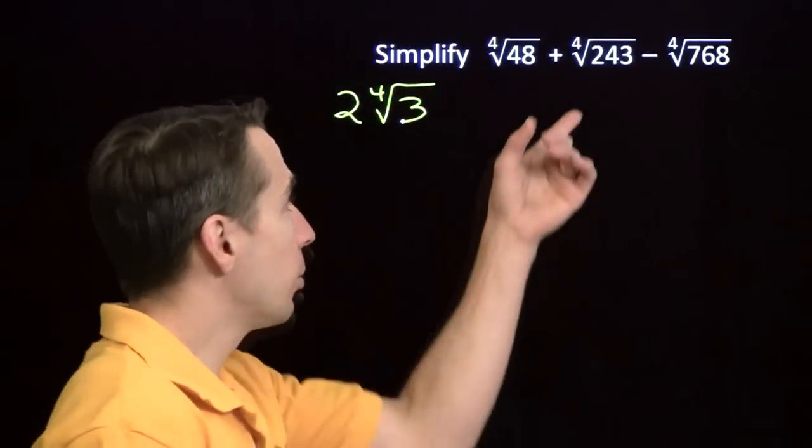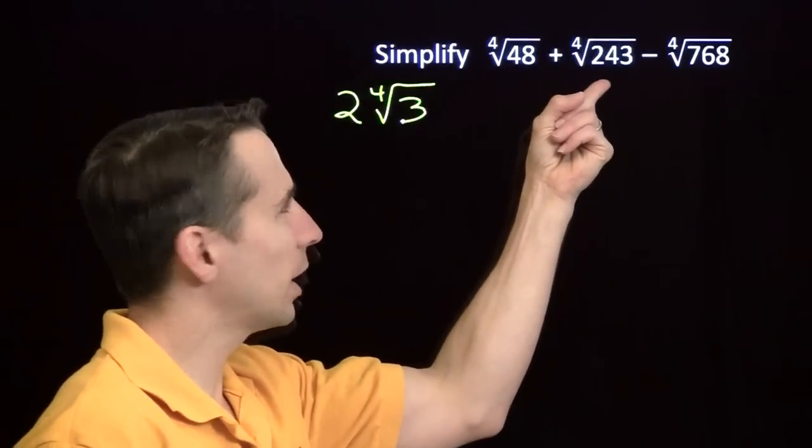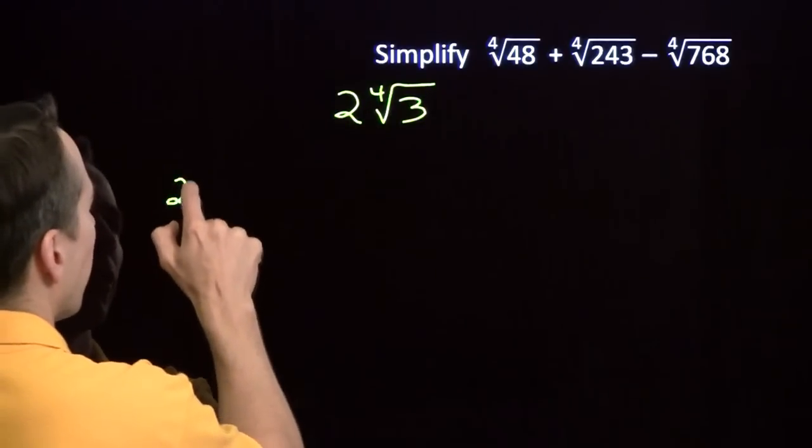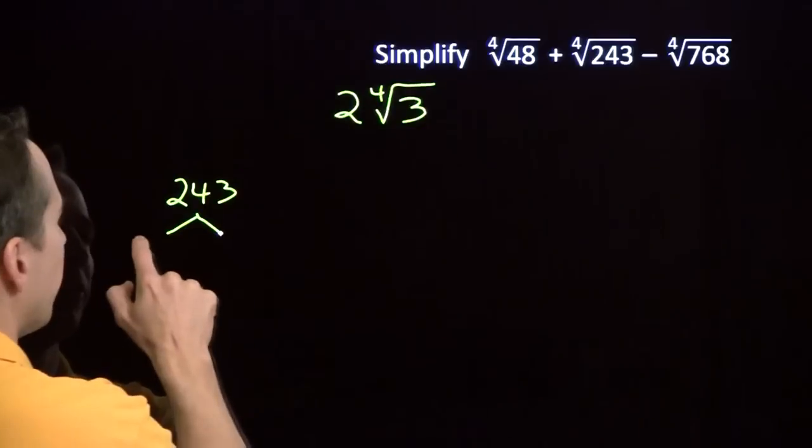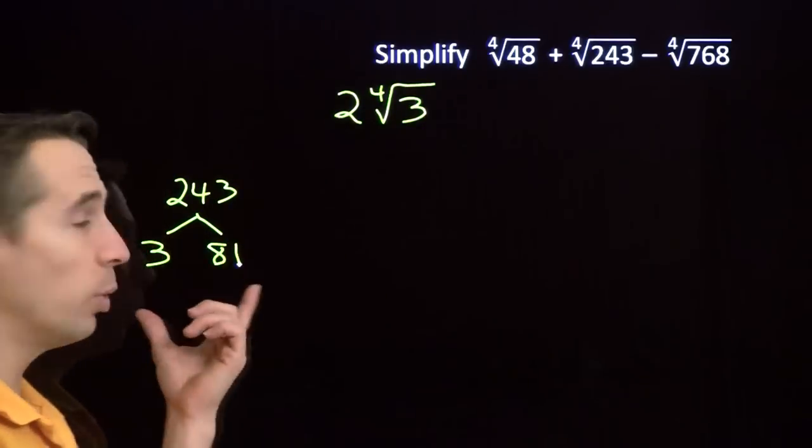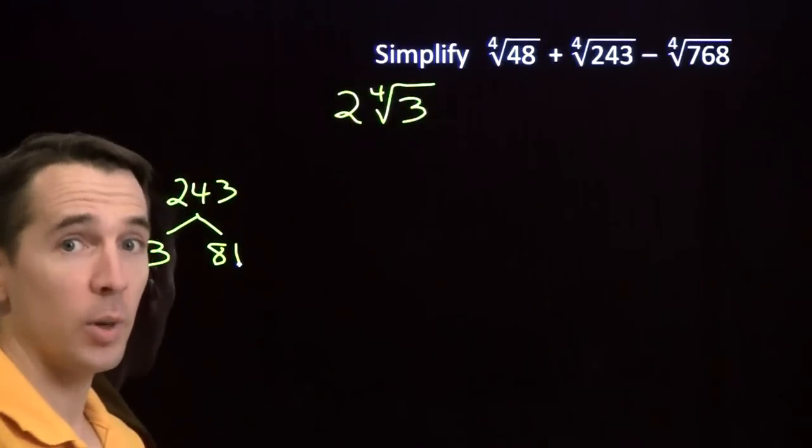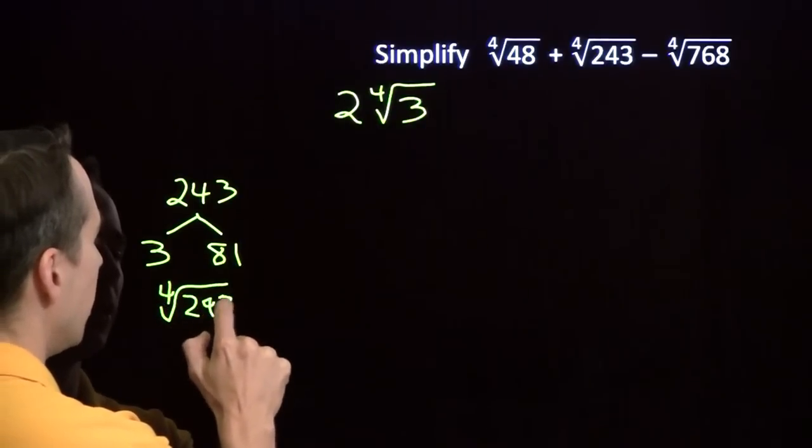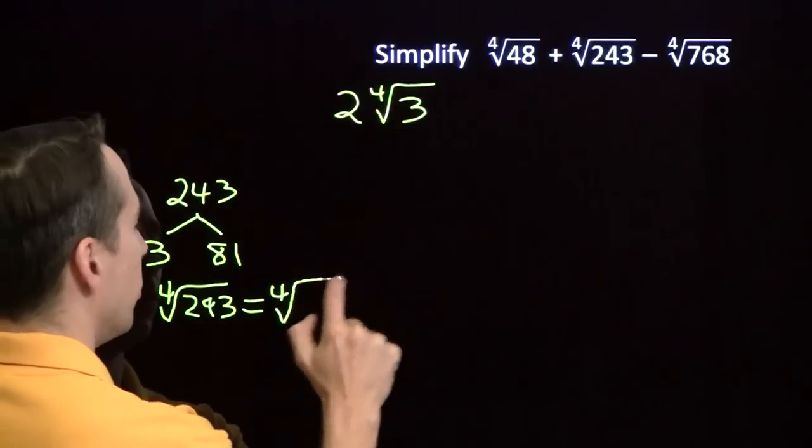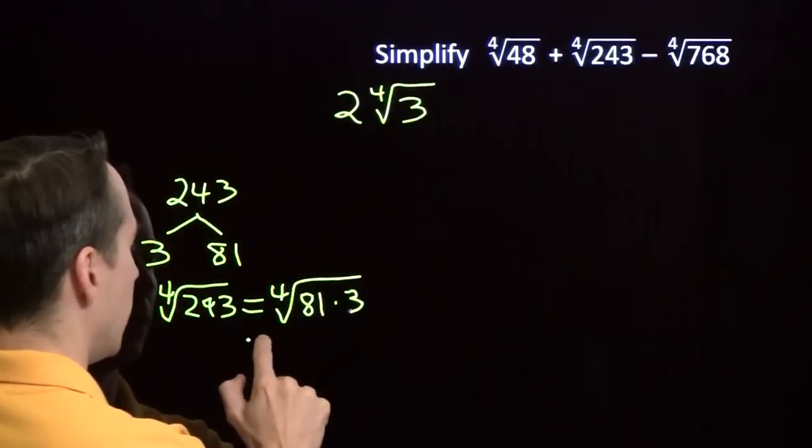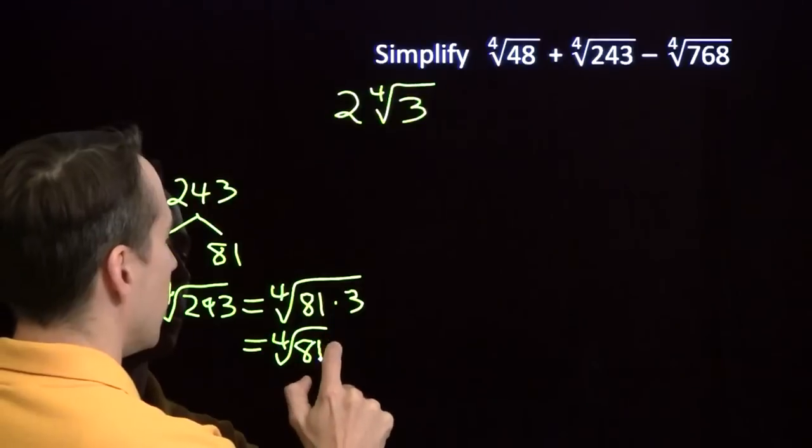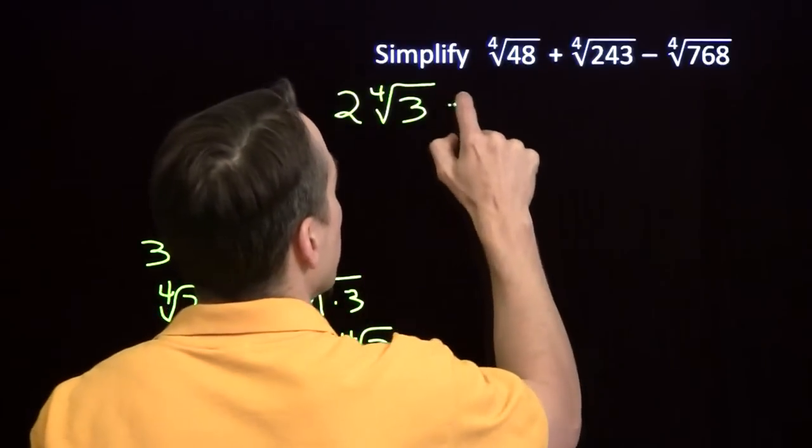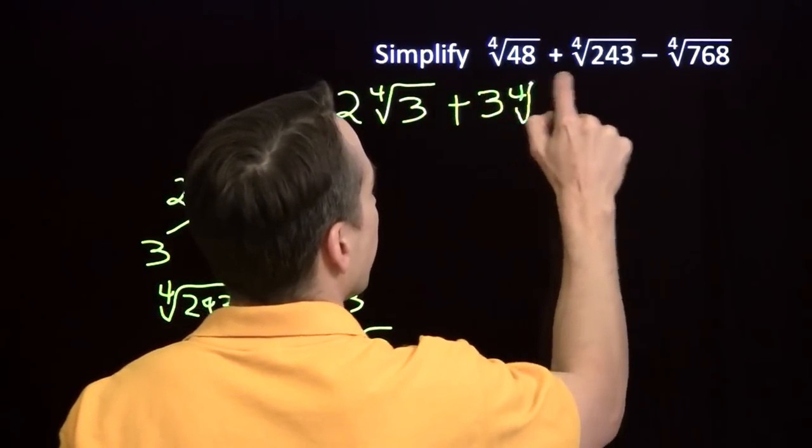243. Well, now we have a plan, right? We're going to start pulling out perfect 4th power factors, but we need to figure out what perfect 4th power factors go into that. So do a little scratch work here. Start off with 243. We can clearly pull out a factor of 3. 3 goes into 243. 81 times. 81. That's 3 to the 4th. 81 is 9 squared. 9 is 3 squared. 81 is 3 to the 4th. So the 4th root of 243 is the 4th root of 81 times 3, which is the 4th root of 81 times the 4th root of 3. The 4th root of 81 is 3. So this is 3 times the 4th root of 3.